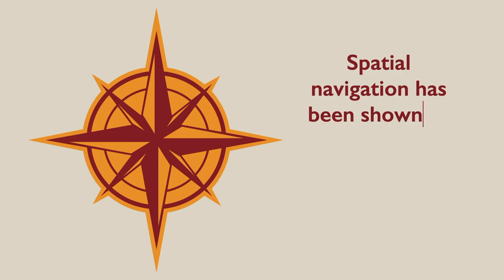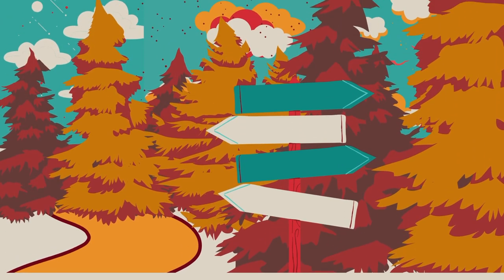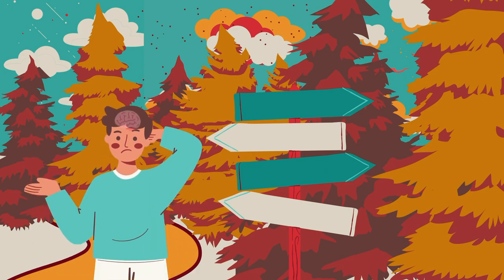Studies have shown that hippocampal neurogenesis is increased in response to certain types of learning, such as spatial navigation tasks. In other words, as an individual learns to navigate through a new environment, new neurons are formed in the hippocampus to help process and store the new information.